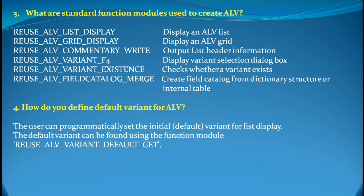The next question is: what are the standard function modules used to create ALV? There is nothing much to explain here, so I'll just read out these standard function modules. The first is REUSE_ALV_LIST_DISPLAY, which is used to display an ALV list. Then REUSE_ALV_GRID_DISPLAY for ALV grid. Then REUSE_ALV_COMMENTARY_WRITE, which is used for output list header information. Then REUSE_ALV_VARIANT_F4, used as a display variant for selection of a dialog box. And then REUSE_ALV_VARIANT_EXISTENCE, which checks whether a variant exists or not.